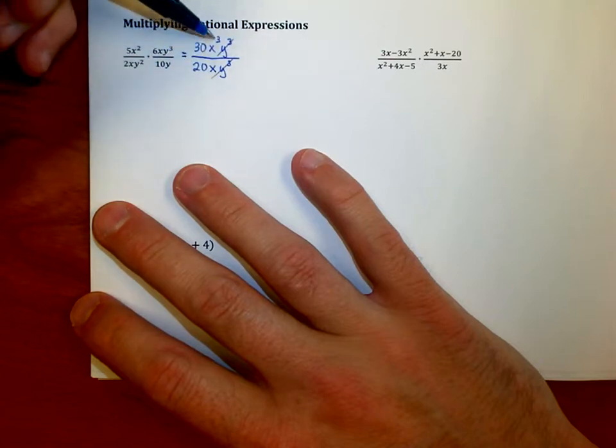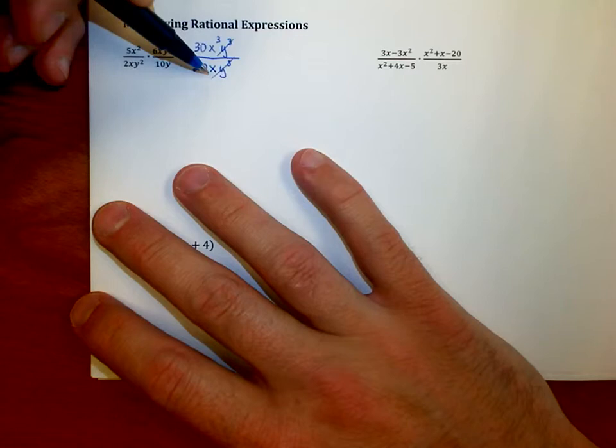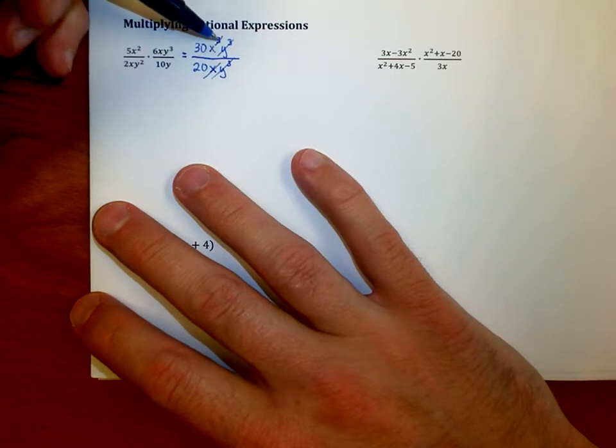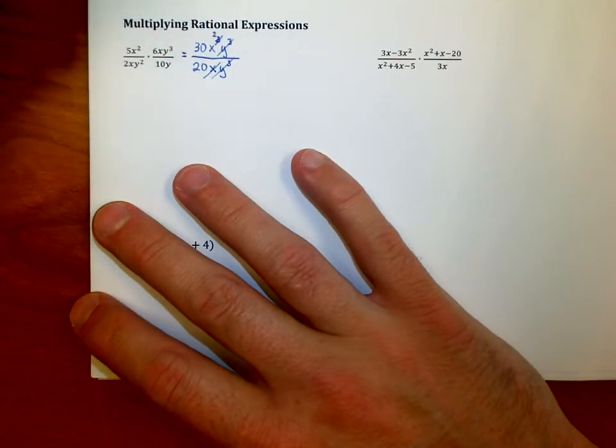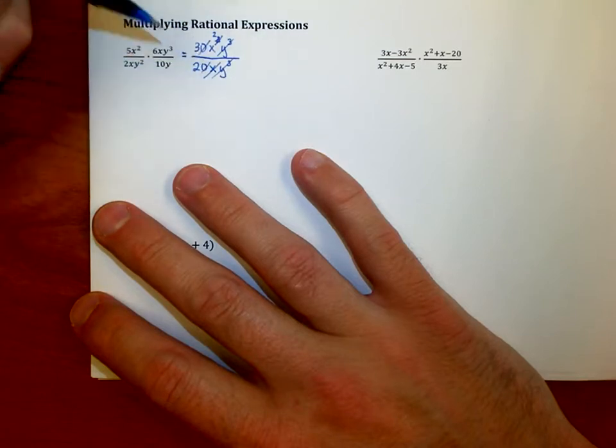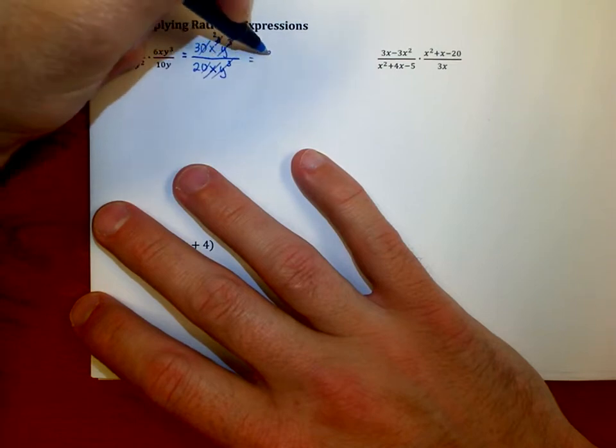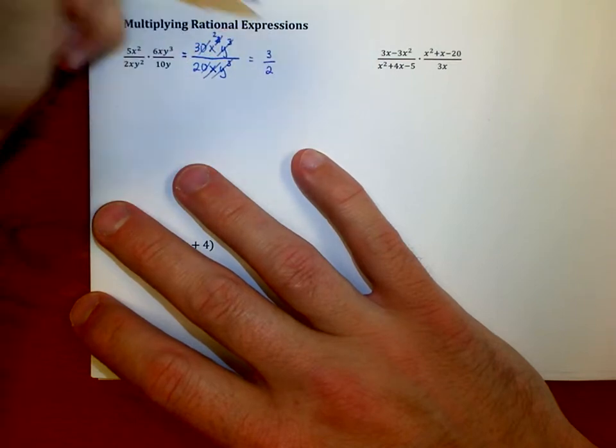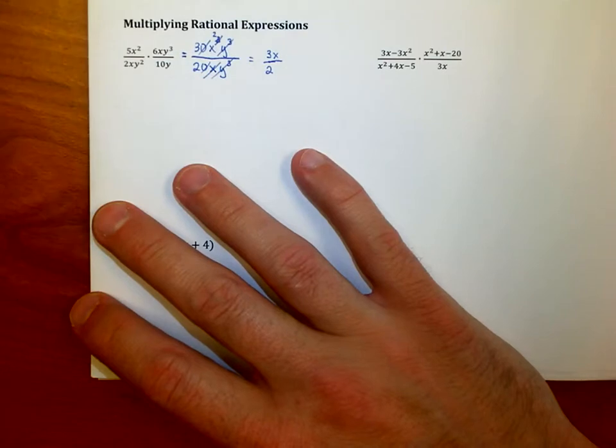I see the y cubes completely go away. I have x cubed on top and a single x on bottom, so one x goes away from both, leaving x squared on top and nothing on the bottom. 30 over 20 reduces to 3 over 2. So I end up with 3 over 2, and I have x squared on the top, so I could write that as 3x squared over 2.